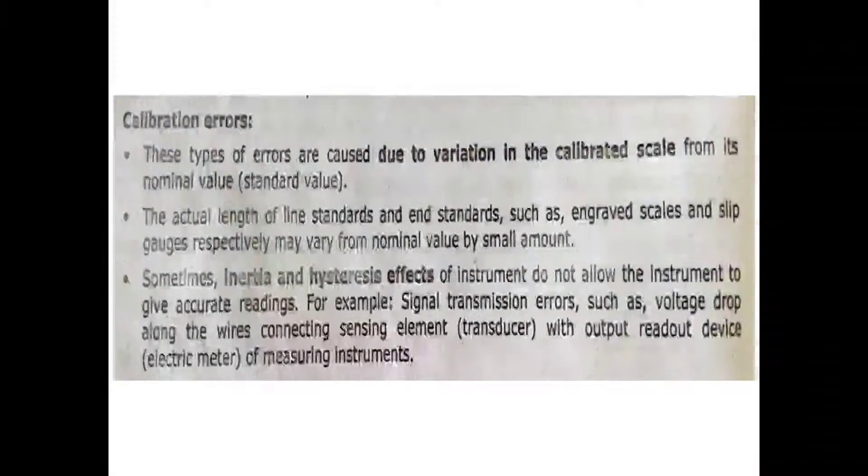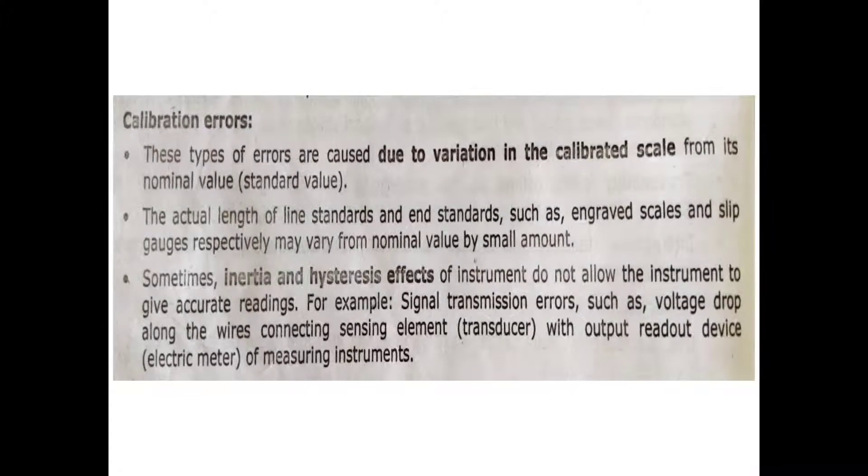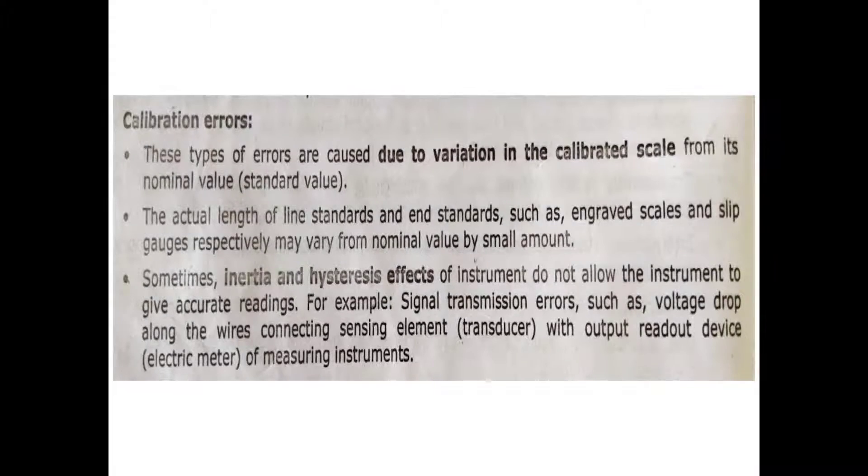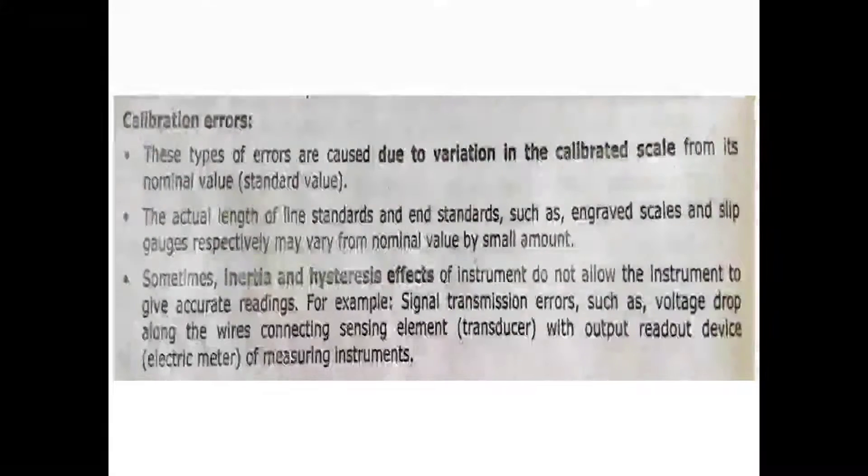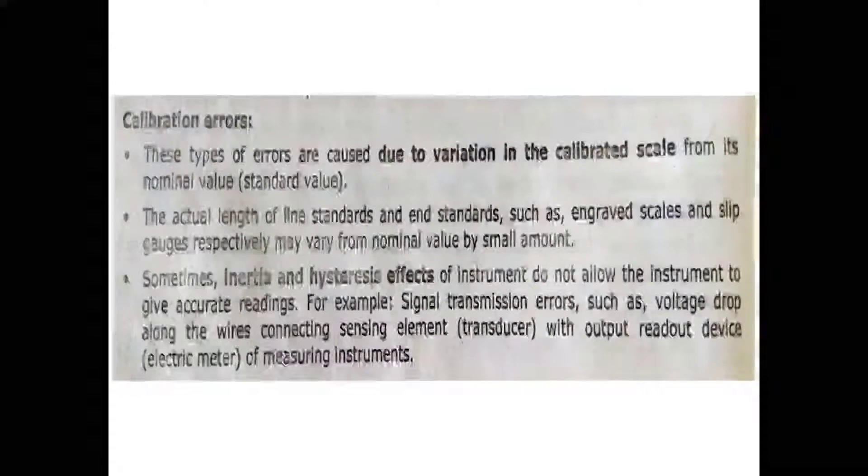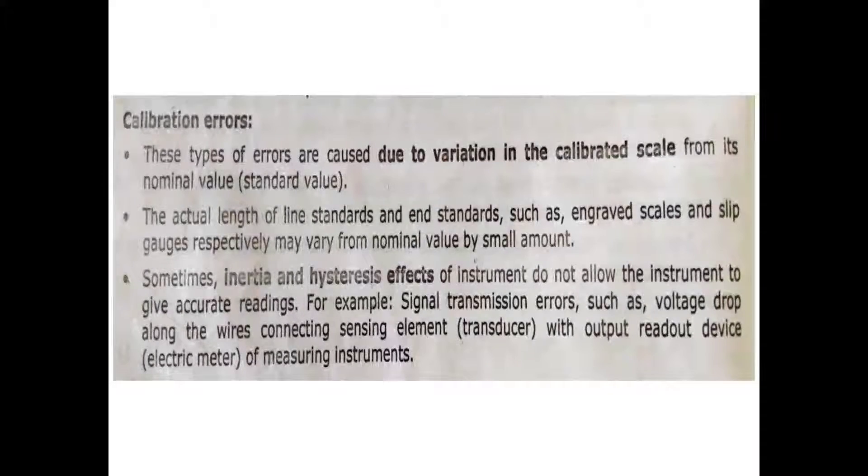Sometimes, inertia and steady-state effects of instruments do not allow the instrument to give accurate readings. For example, signal transmission errors such as voltage drop along the wires connecting sensing elements with output readout devices (electric meters) of measuring instruments. These are calibration errors.